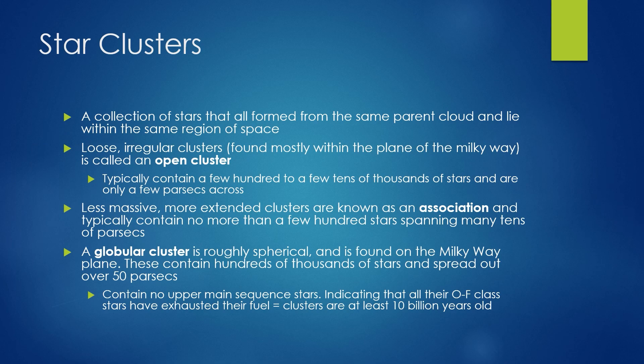Star clusters are a collection of stars that have all formed from the same parent cloud and lie within the same region of space — they're going to be parsecs or light years away from each other, but they formed in the same parent cloud. Loose, irregular clusters found mostly within the plane of the Milky Way are known as open clusters, which typically contain a few hundred to a few tens of thousands of stars and are only a few parsecs across. A less massive, more extended cluster is known as an association, typically containing no more than a few hundred stars spanning many tens of parsecs.